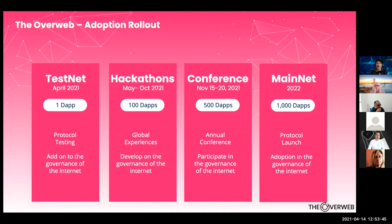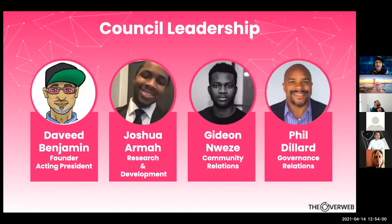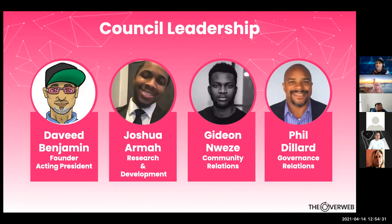We're in testnet right now. We have one dApp that's almost finished. We're going to be doing hackathons for the next several months starting in May, and a global conference in November, going to mainnet next year. We've got a highly experienced team — I've been working on regeneration, decentralization, and entertainment for the past two decades. Joshua Armagh has deep experience in blockchain technology, AI, and data sciences and is also an impact investor. Gideon is an amazing blockchain marketer. This is just the beginning of the council — we have a whole other set of people, including much-needed feminine energy, being added.